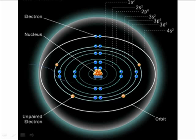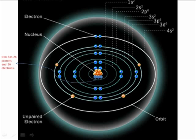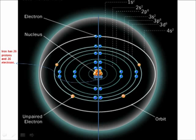If we were to enlarge the nucleus of the iron atom to reach the dimensions of a period at the end of a sentence, then the diameter of the atom will reach the height of the final constructed 20-meter tower located at Neptune Farm in Salem, New Jersey.